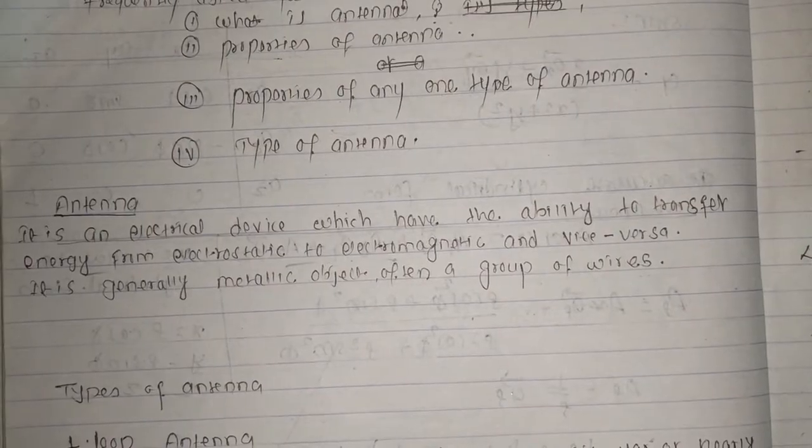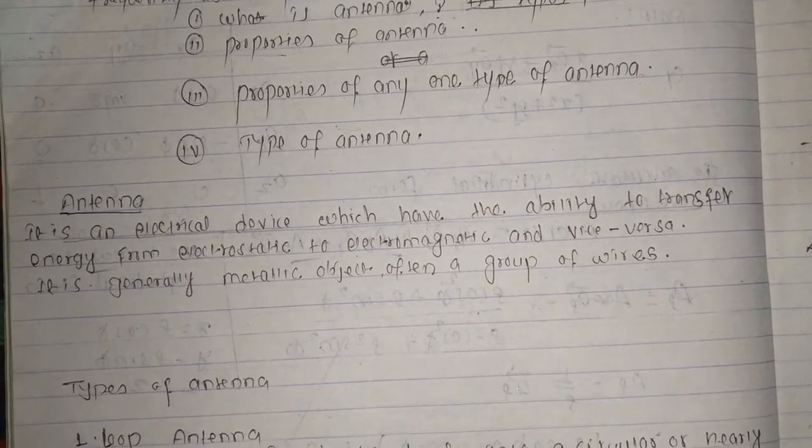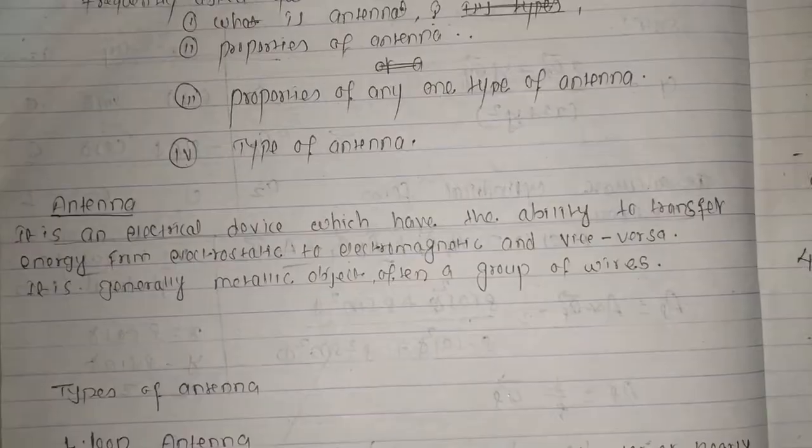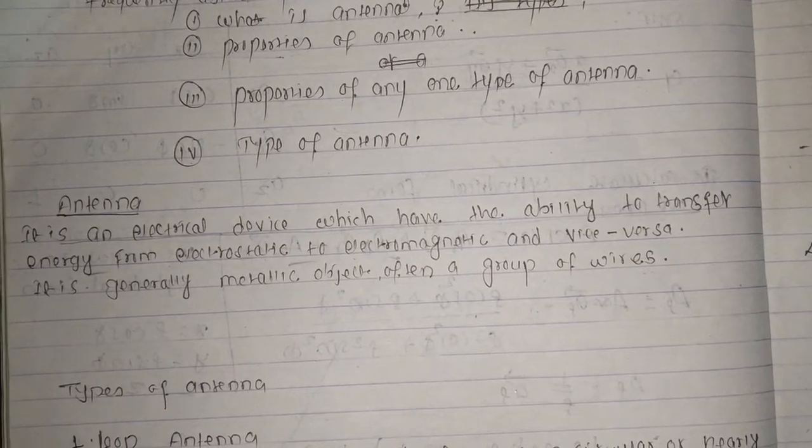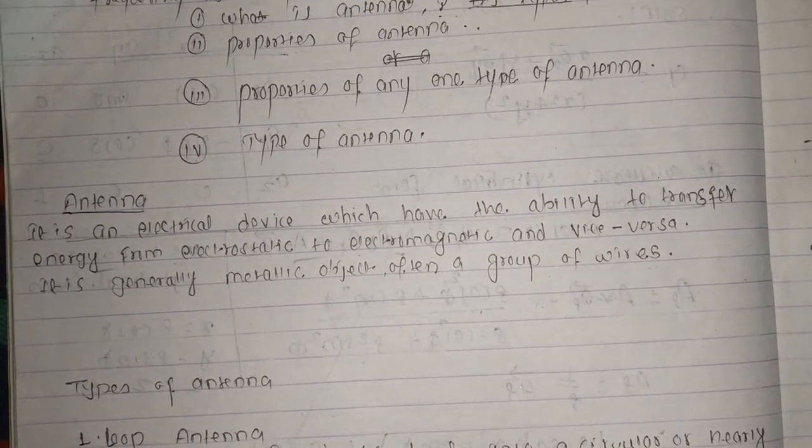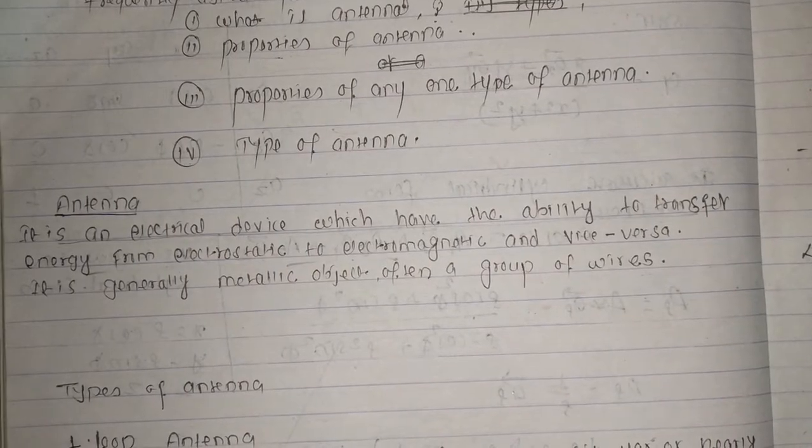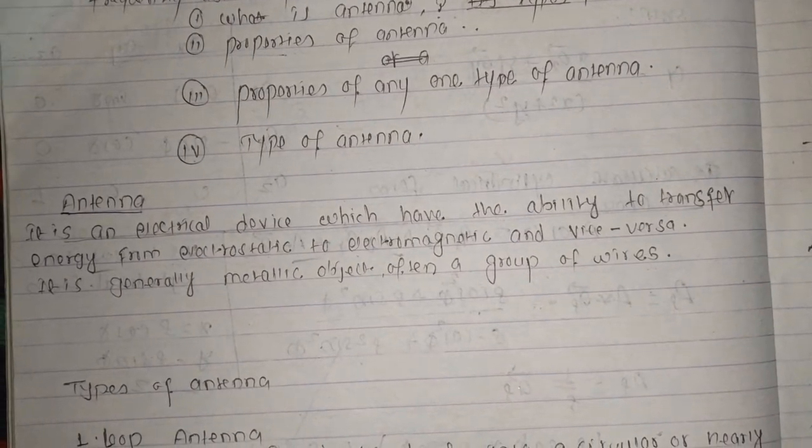It is capable of transferring energy from electrostatics to electromagnetic and electromagnetic to electrostatics. It is generally a metallic object. If it is an electrical device, it has metal. It is generally a metallic object, often a group of wires.